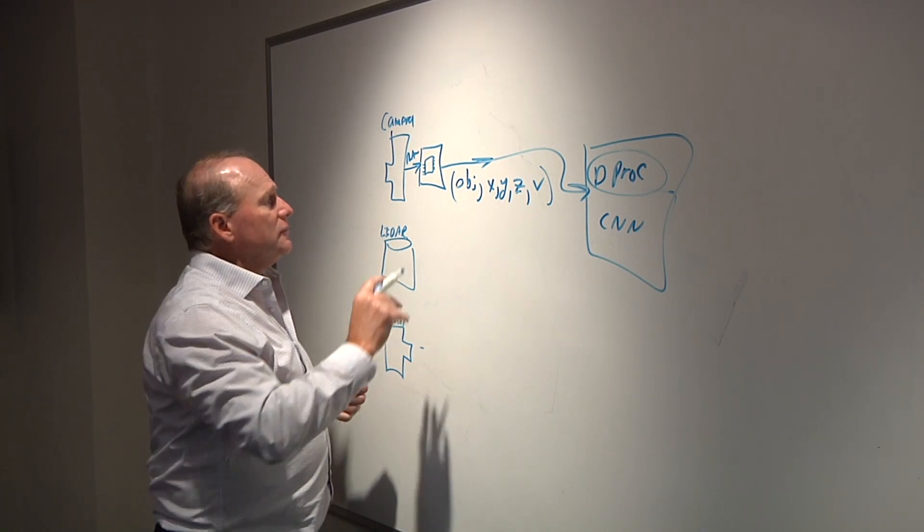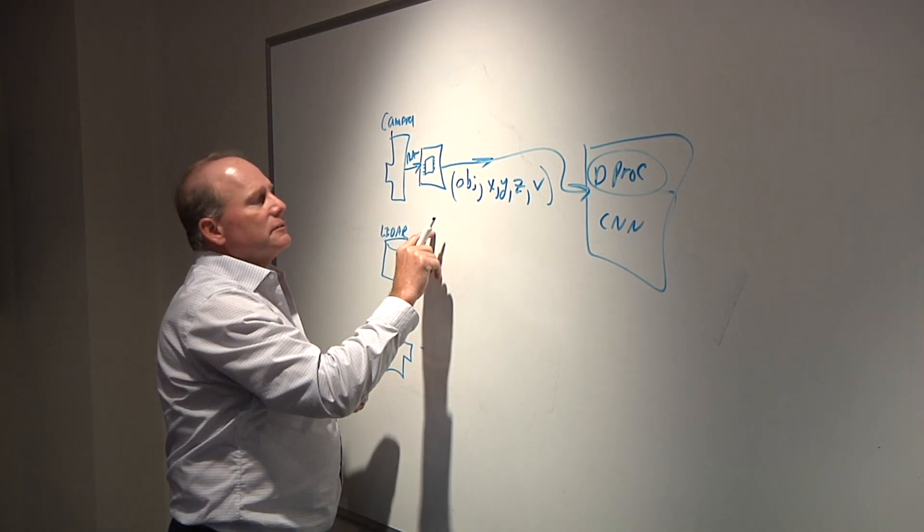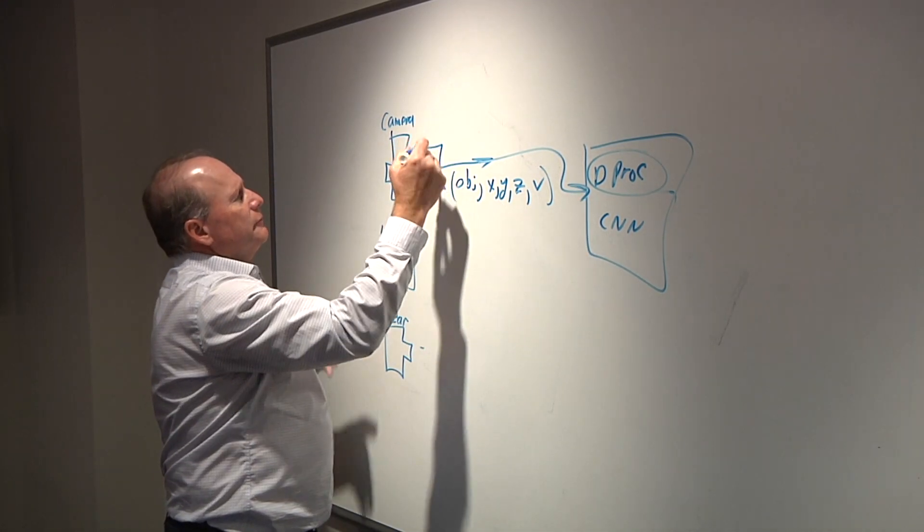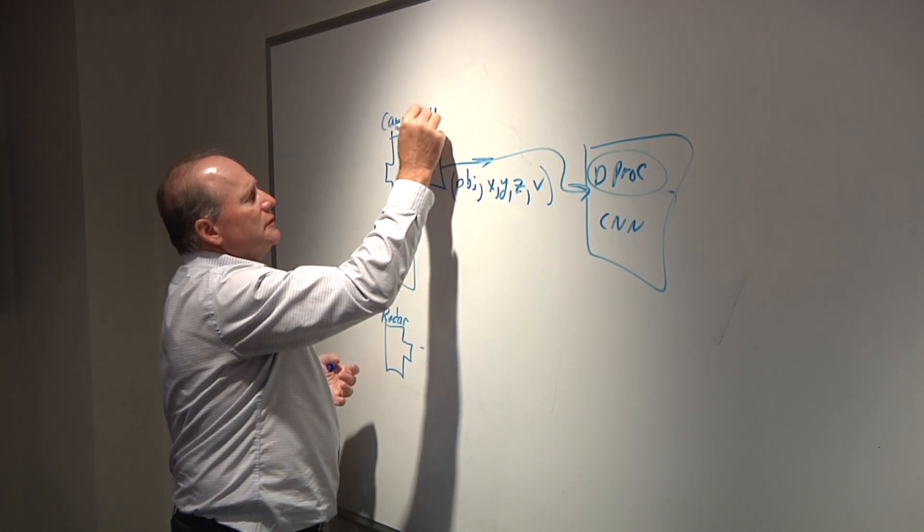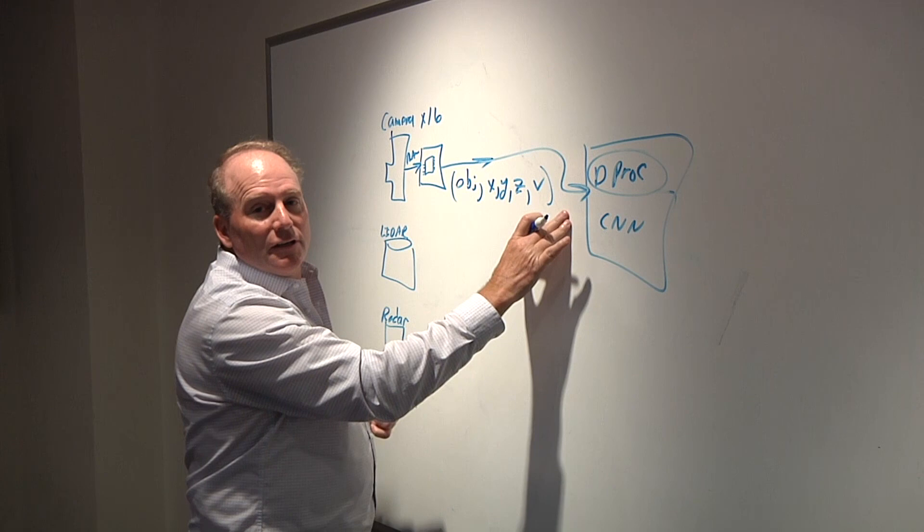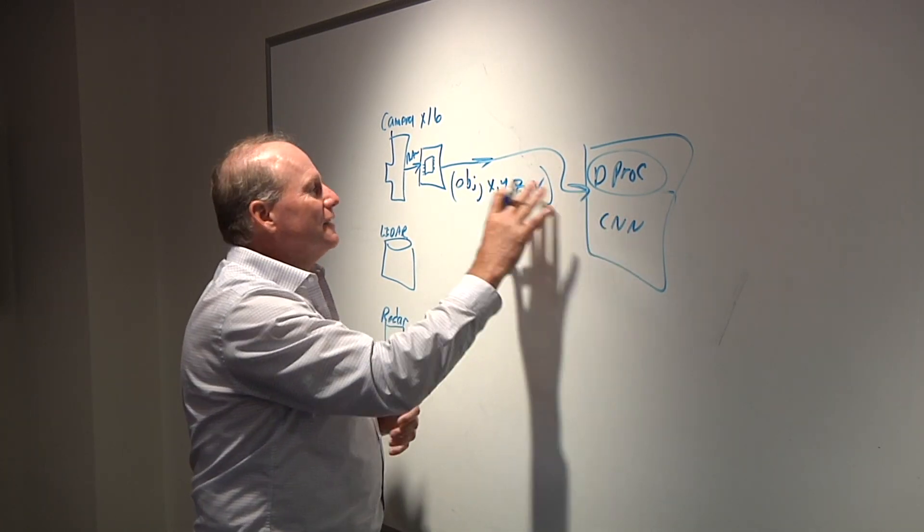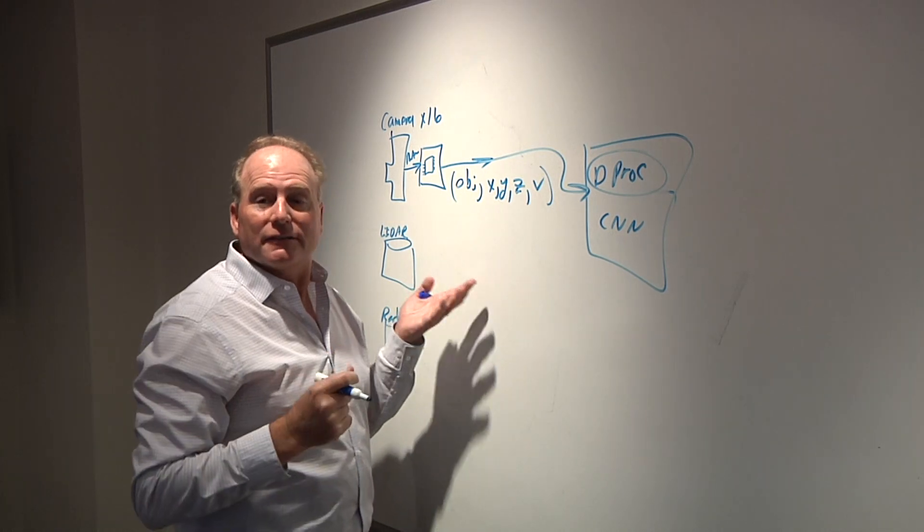Yeah, you can actually even put redundancy down at the sensor level. Not necessarily duplicating every sensor, but say, as I said before, you could have as many as 16 of these cameras. So if you have two stereo cameras on the front and one of them is obscured by mud and the other one is not, then you can actually adjust for the fact that that's the case.